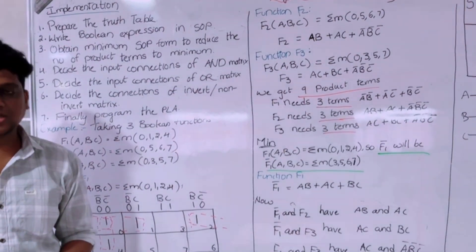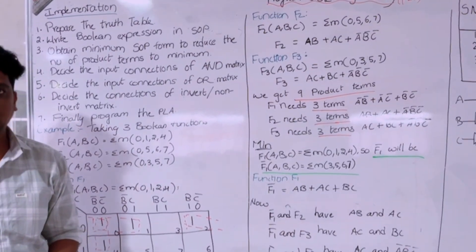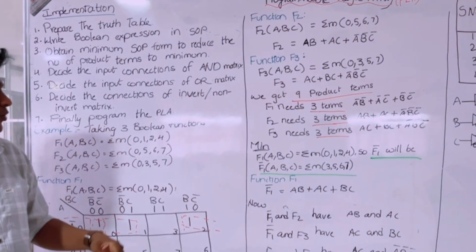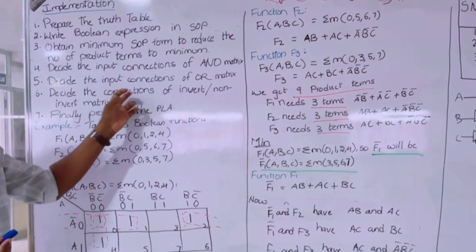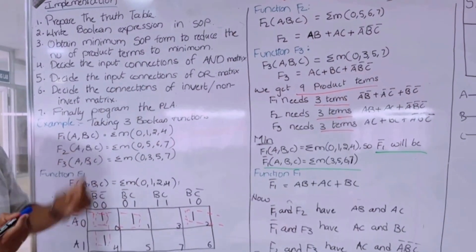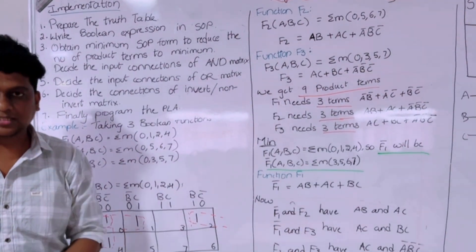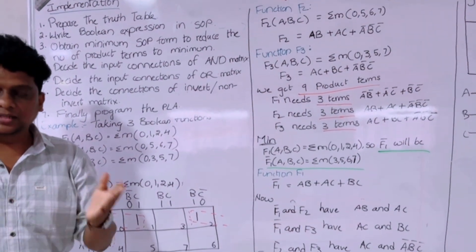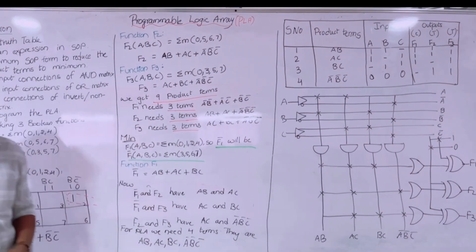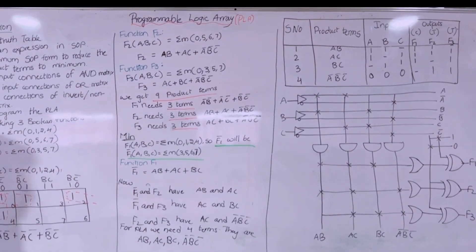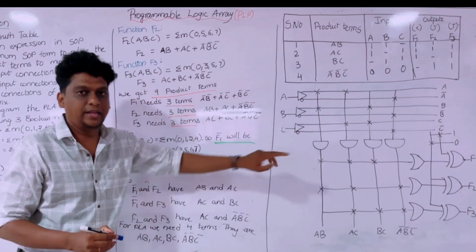For the input functions we are using the buffer element, so that A and A-bar are used along with the connections of the invert and non-invert matrix. Then after defining all these things, we design a programming table. From the programming table we can then design the circuit that we need.